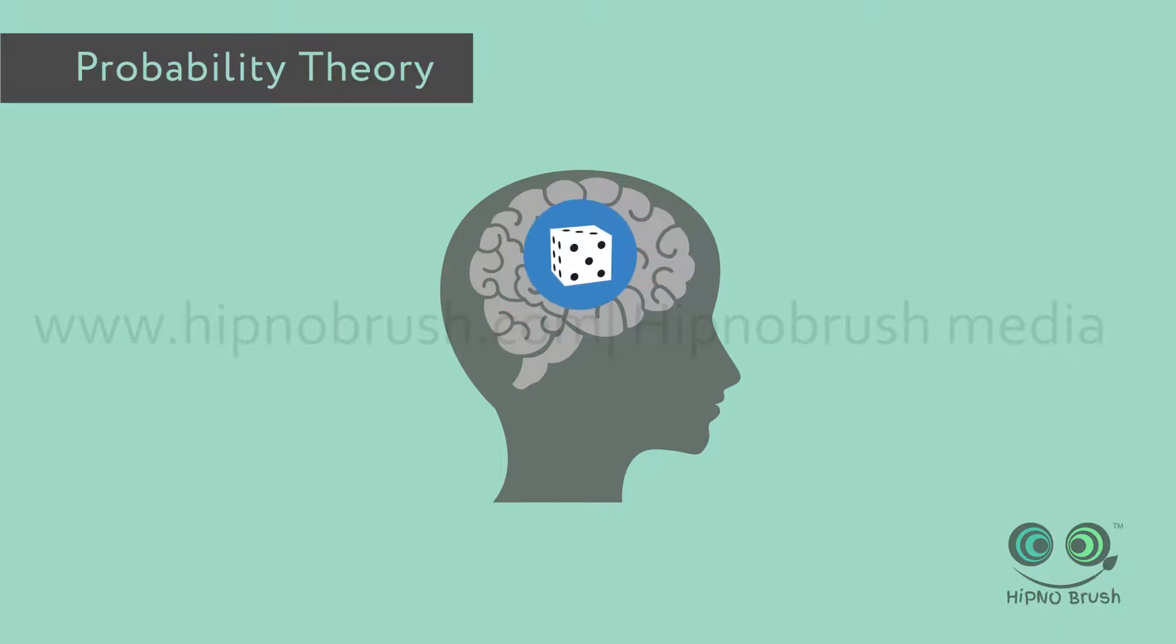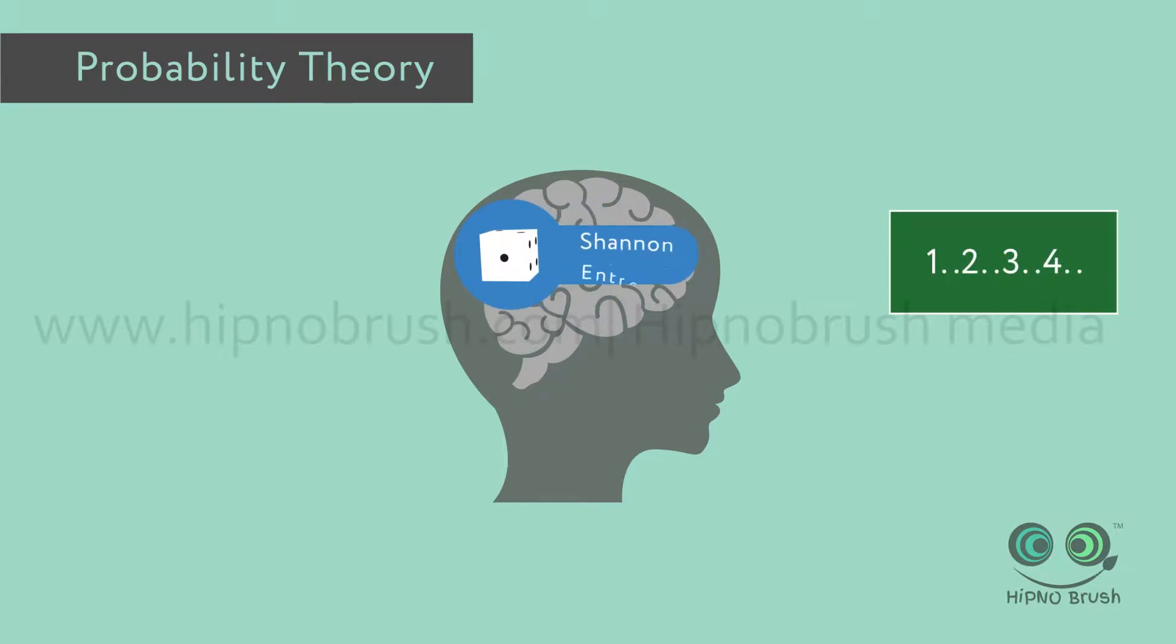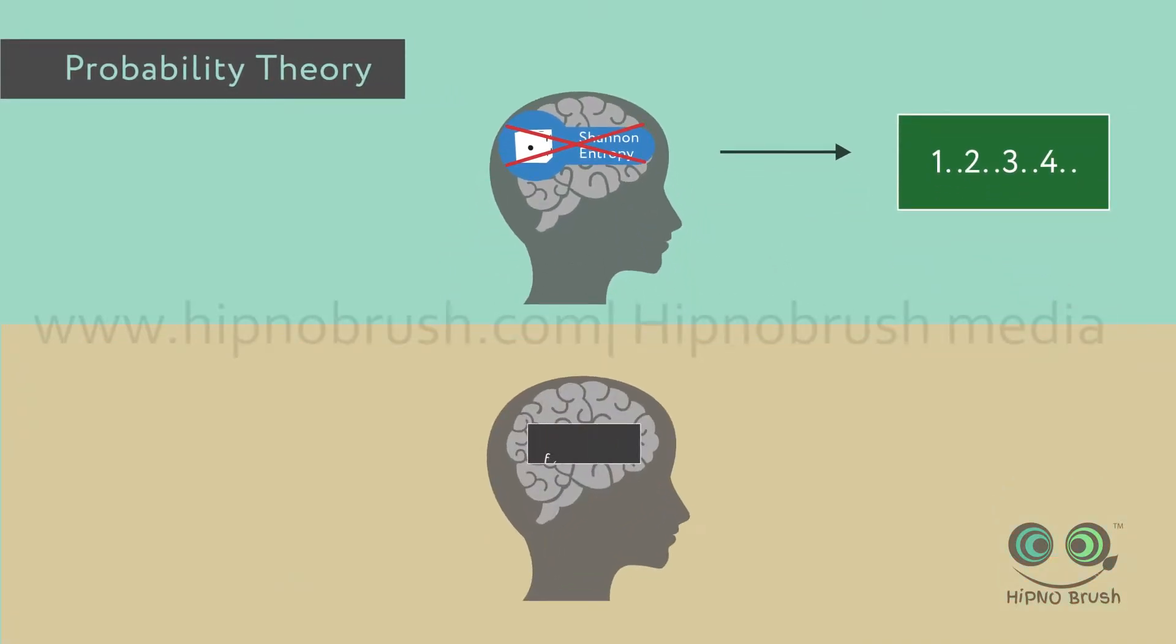For example, the skill of remembering consecutive digits cannot be quantified by classical statistical tools such as Shannon entropy because they cannot recognize the algorithmic nature of a sequence that the mind can easily recognize and recall.